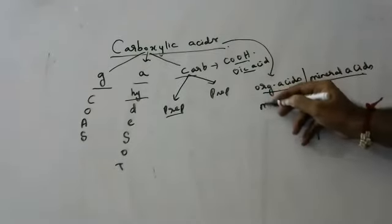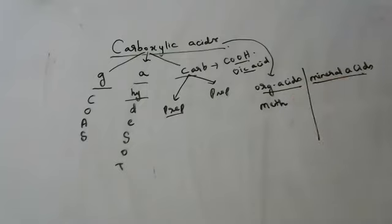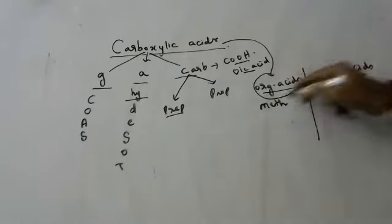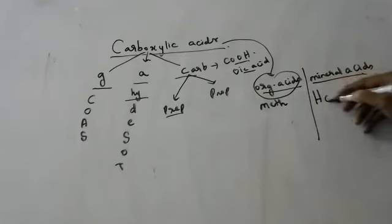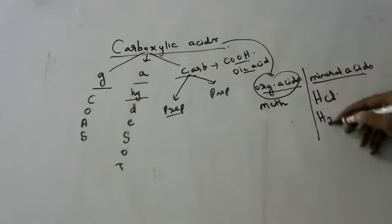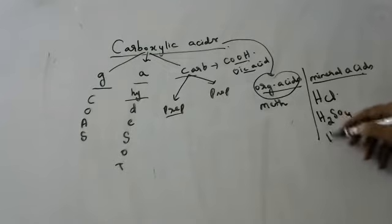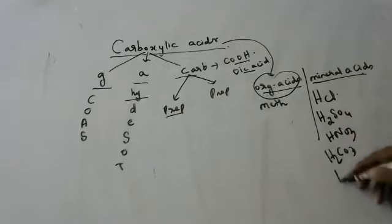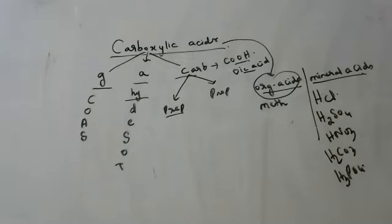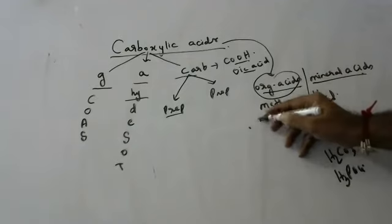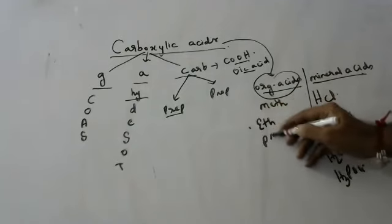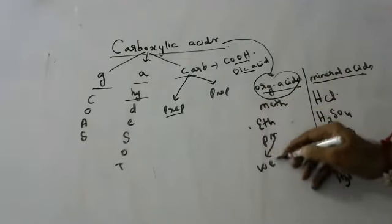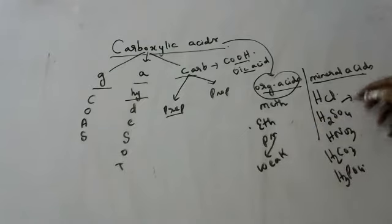Examples of organic acids include methanoic acid, ethanoic acid, propanoic acid, butanoic acid, pentanoic acid, heptanoic acid — these are all organic acids. Mineral acids are things like HCl (hydrochloric acid), H2SO4 (sulfuric acid), HNO3 (nitric acid), H2CO3 (carbonic acid), H3PO4 (phosphoric acid). These are mineral acids, whereas methanoic acid, ethanoic acid, propanoic acid are organic acids.